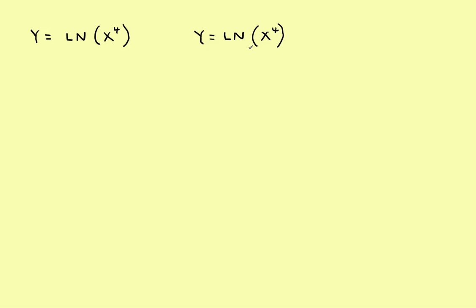I'm going to work the next example two ways — first without using log rules. If you do it straight away, the derivative is 1 over the argument times the derivative of the argument, using the power rule. If you simplify that, you have x cubed in the top and x to the fourth in the bottom, which simplifies down to 4 over x.